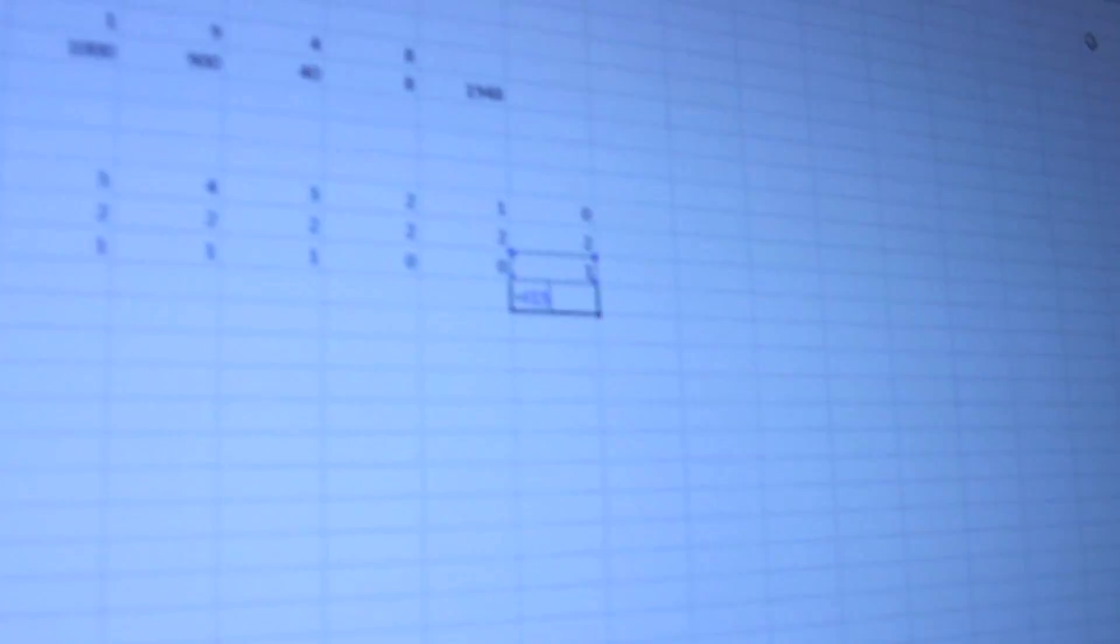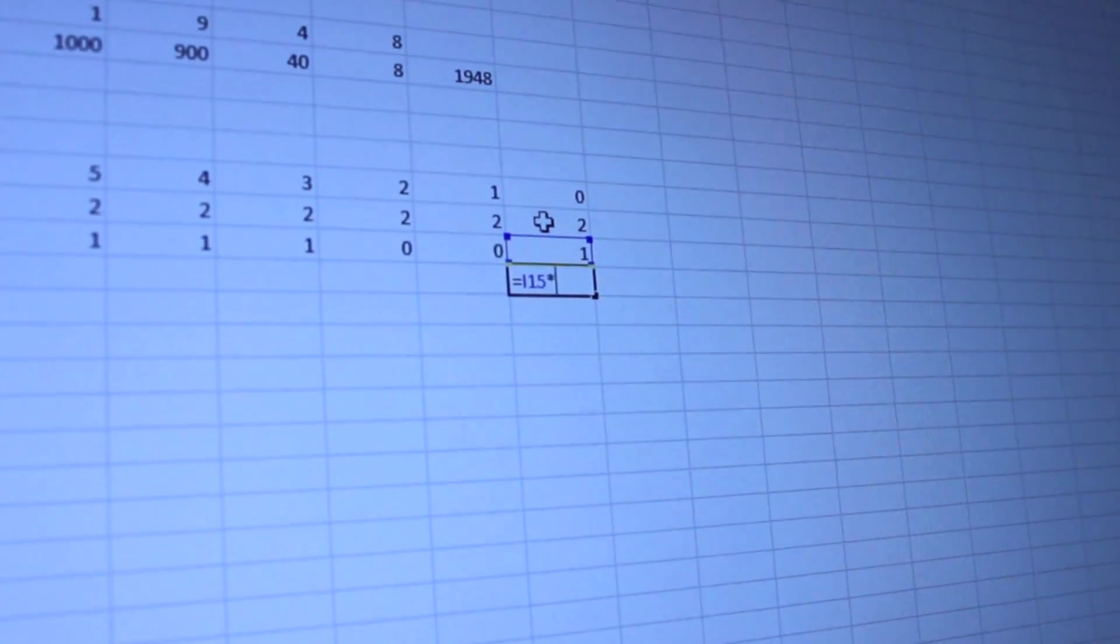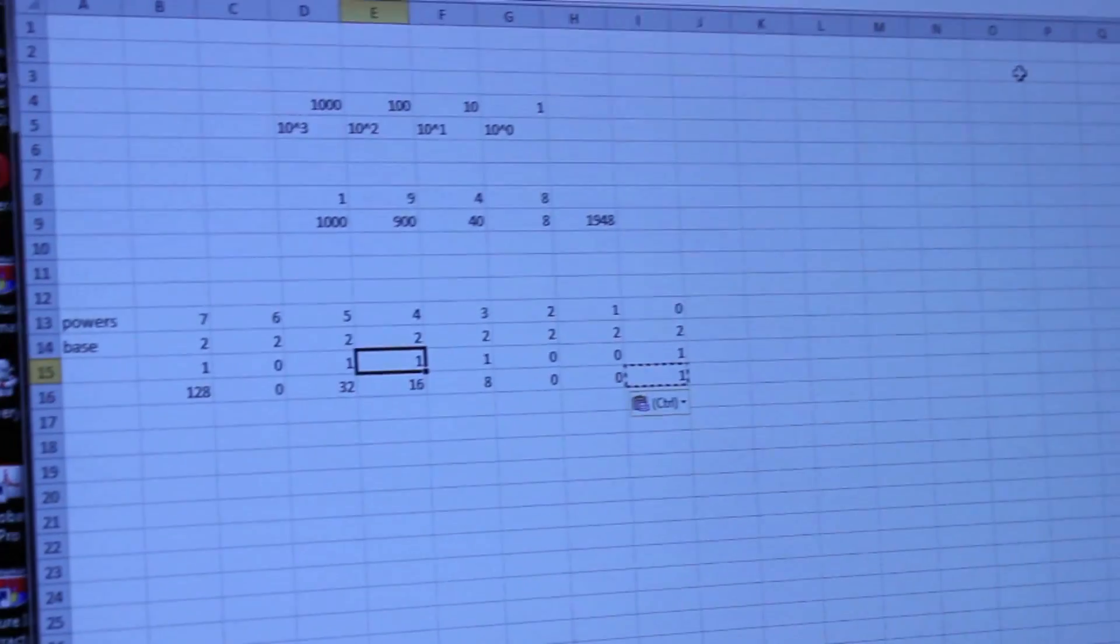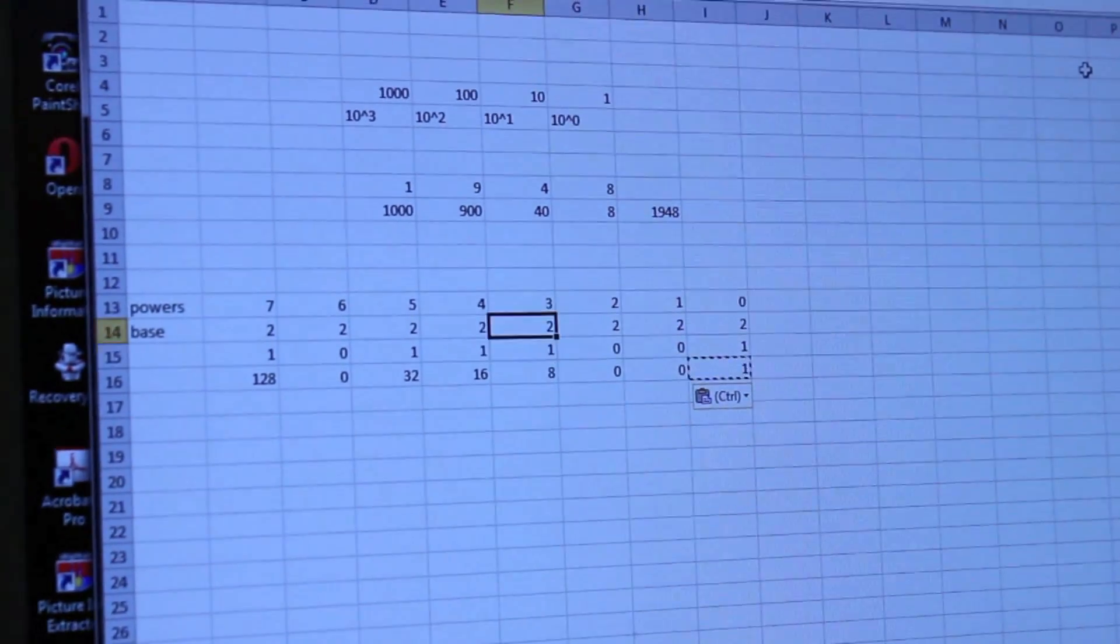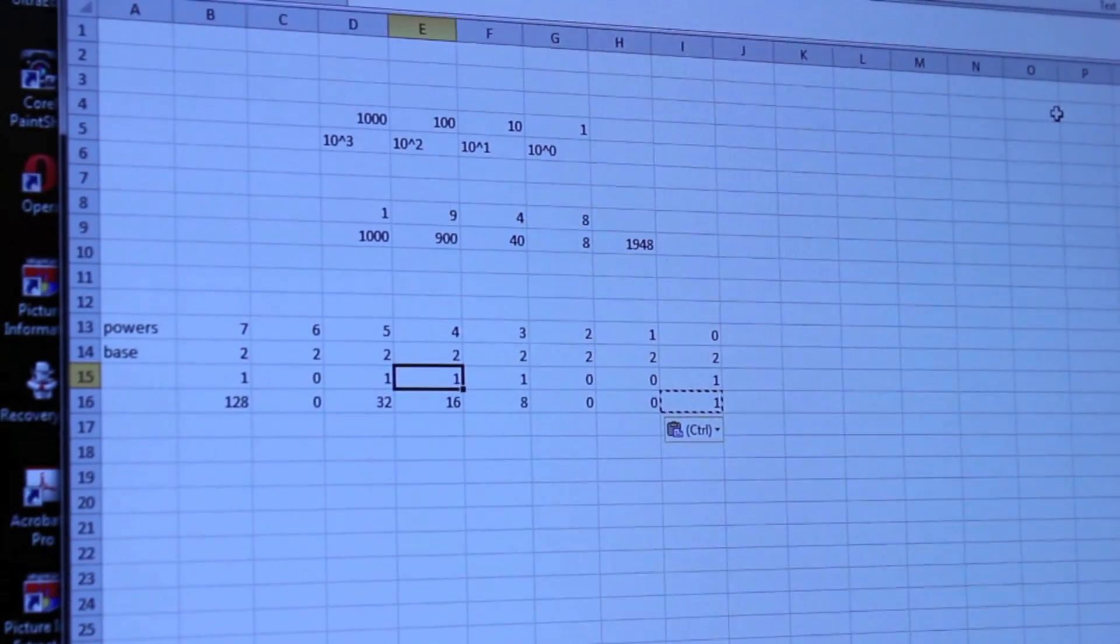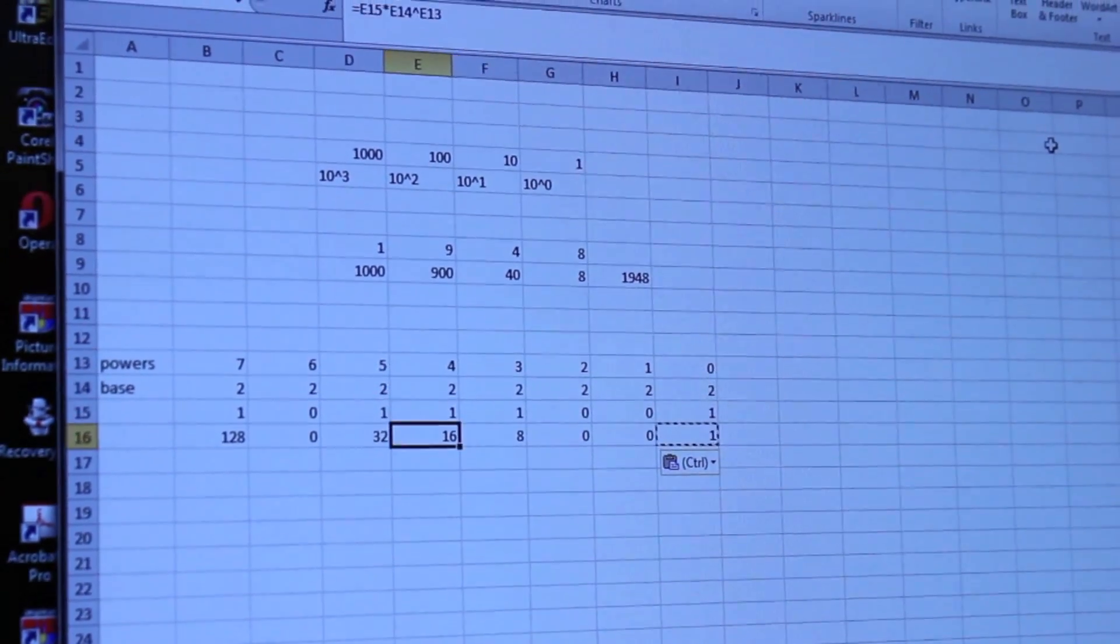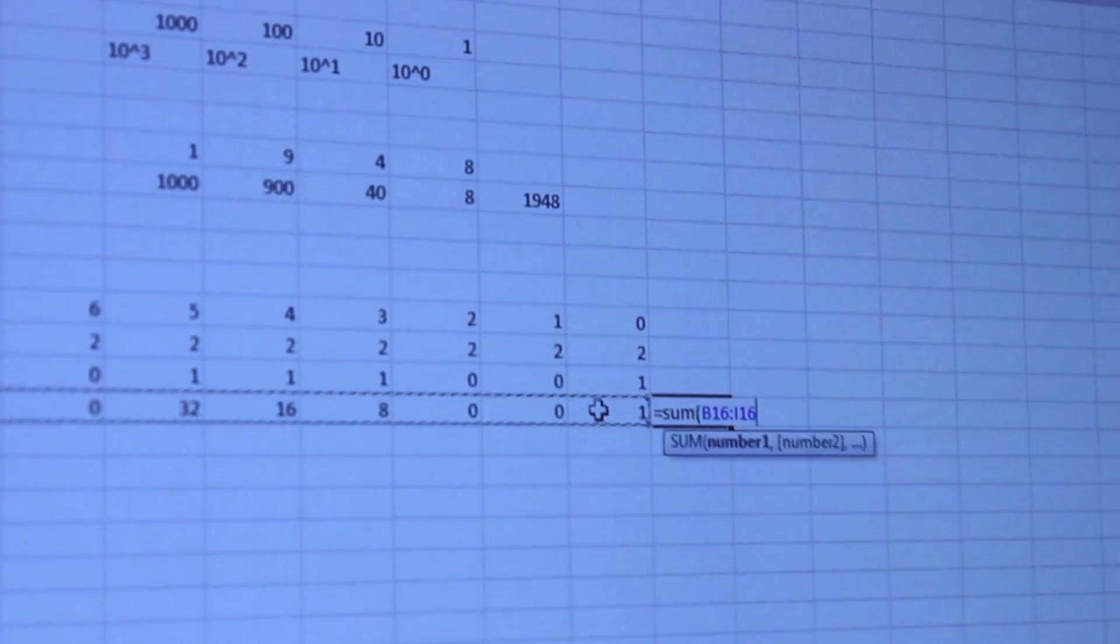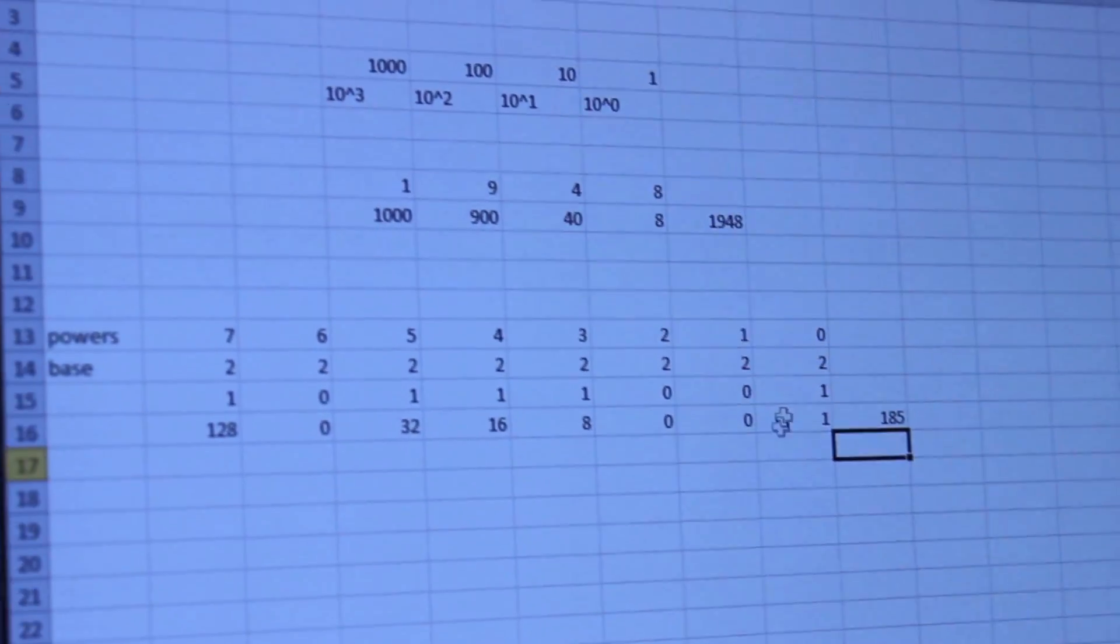We take the number, and we multiply it by the base raised to the power. Zero times anything is going to be zero. Now here we have a one times two raised to the third power, so that's eight. Here we have a one times two to the fourth power, so that's sixteen. And then if I sum all of those, I indeed get the number in base ten as 185.